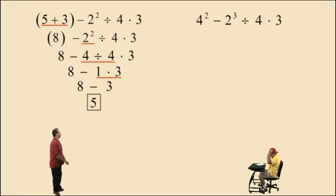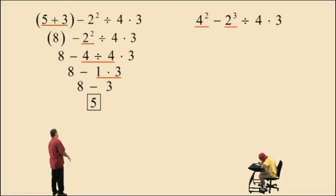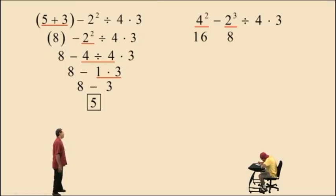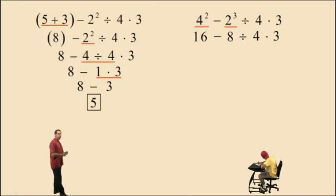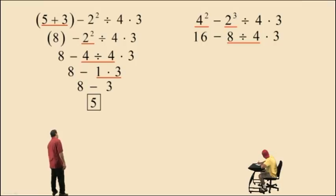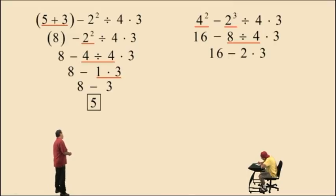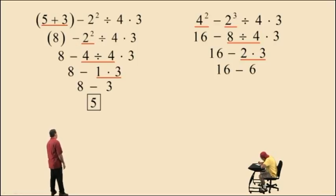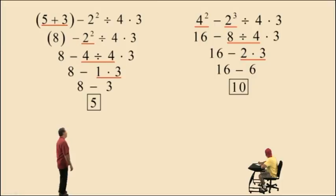Okay, let's go to this one. Notice we do not have any parentheses. Go to our next category, which is exponents. We do have exponents. 4 squared is 4 times 4, that's 16. 2 cubed is 2 times 2 times 2, which is 8. Bring down our work. Now we have a subtraction, division, and a multiplication. Remember, multiplication and division are in the third category, and you have to perform the operations working left to right whichever comes first. In this case, division came first, so we must perform that operation. That's 8 divided by 4, which is 2. Bring down our work. Now we have a subtraction and a multiplication symbol. We must perform the multiplication first. 2 times 3 is 6. Bring down your work. And 16 subtract 6 is 10.